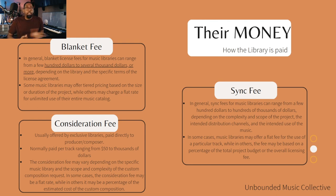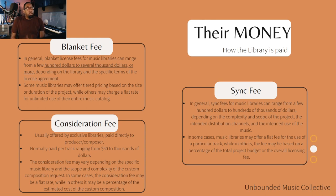Let's look at the money — how the library is paid. This is important because the library pays you. If you don't understand how the library is getting their money, you will miss out on money and miss out on important conversations. For blanket license fees, in general, they can range from a few hundred dollars to several thousand dollars or more, depending on the library and the specific terms. Some libraries offer tiered pricing based on project size or duration, while others charge a flat rate for unlimited use of their entire music catalog.